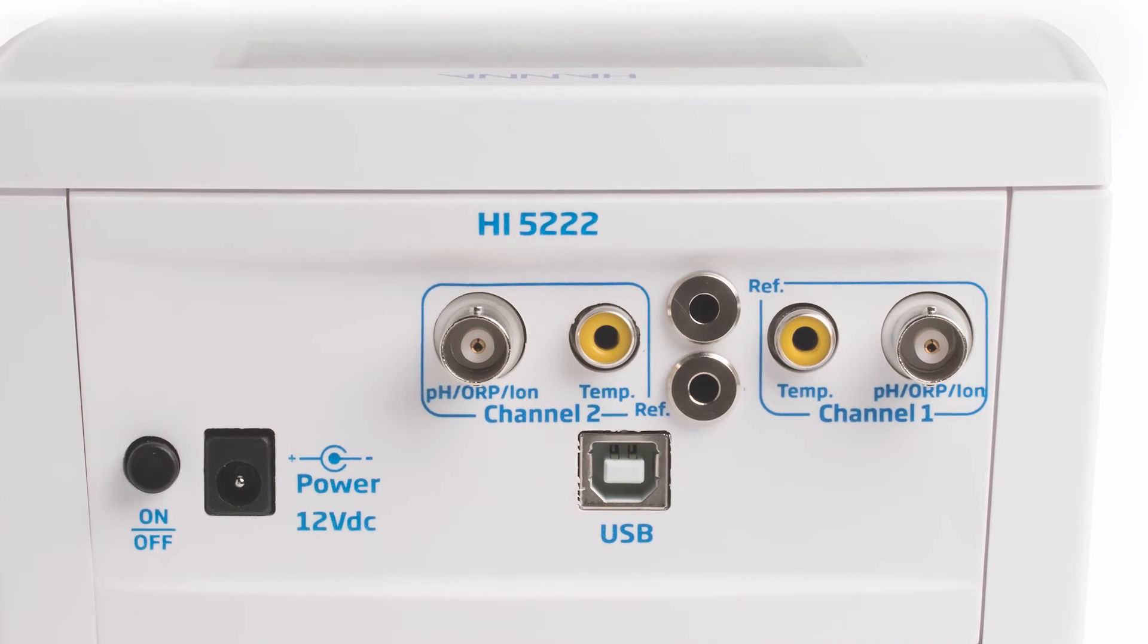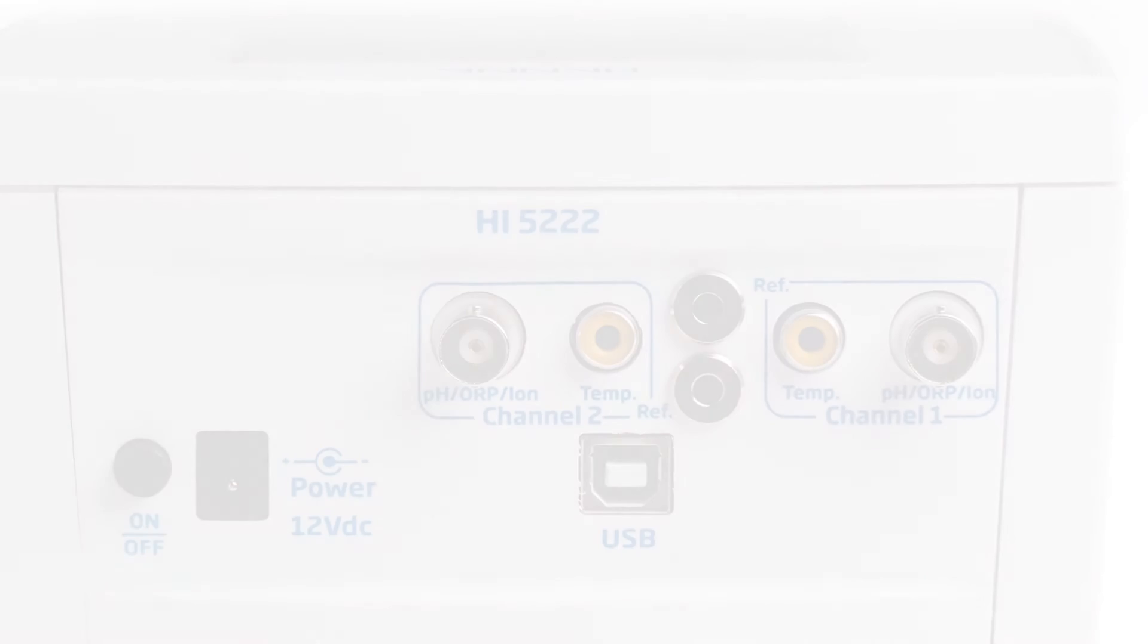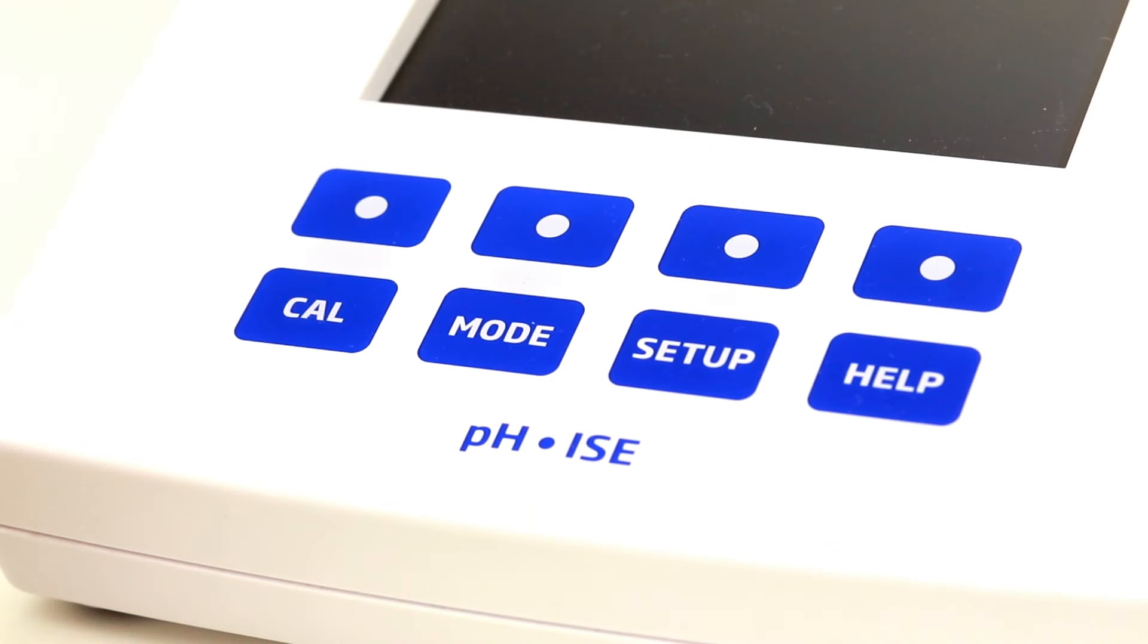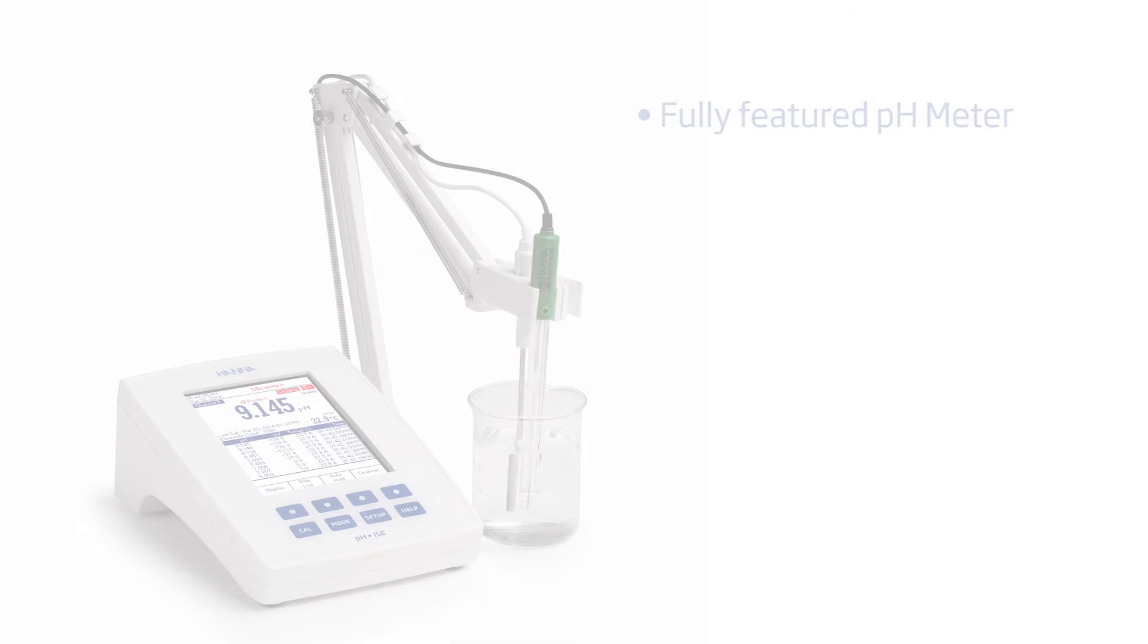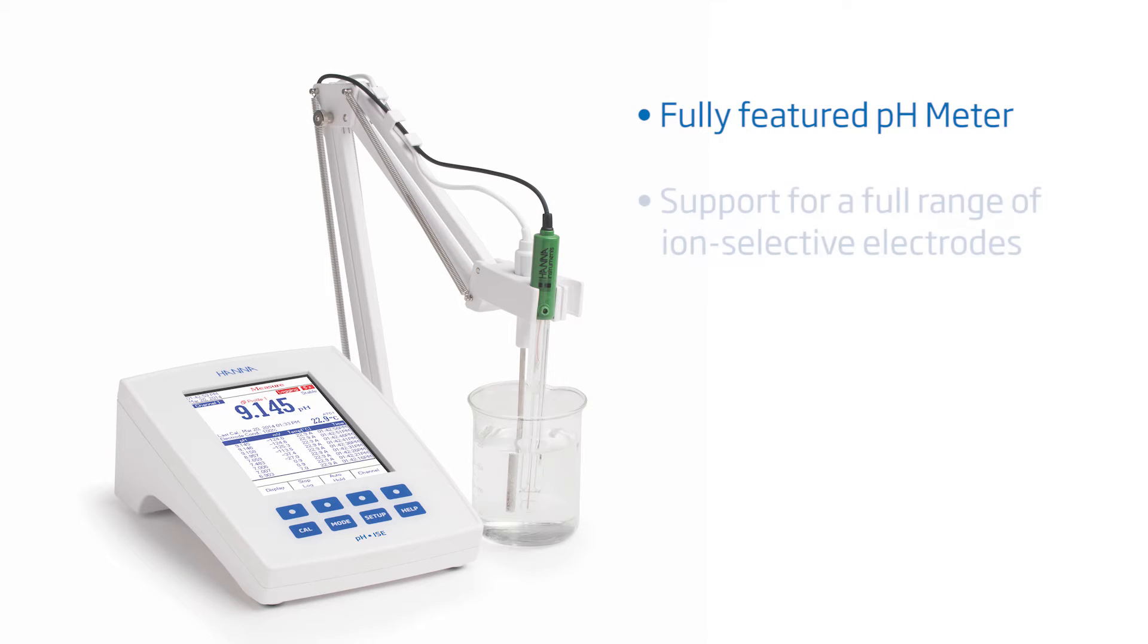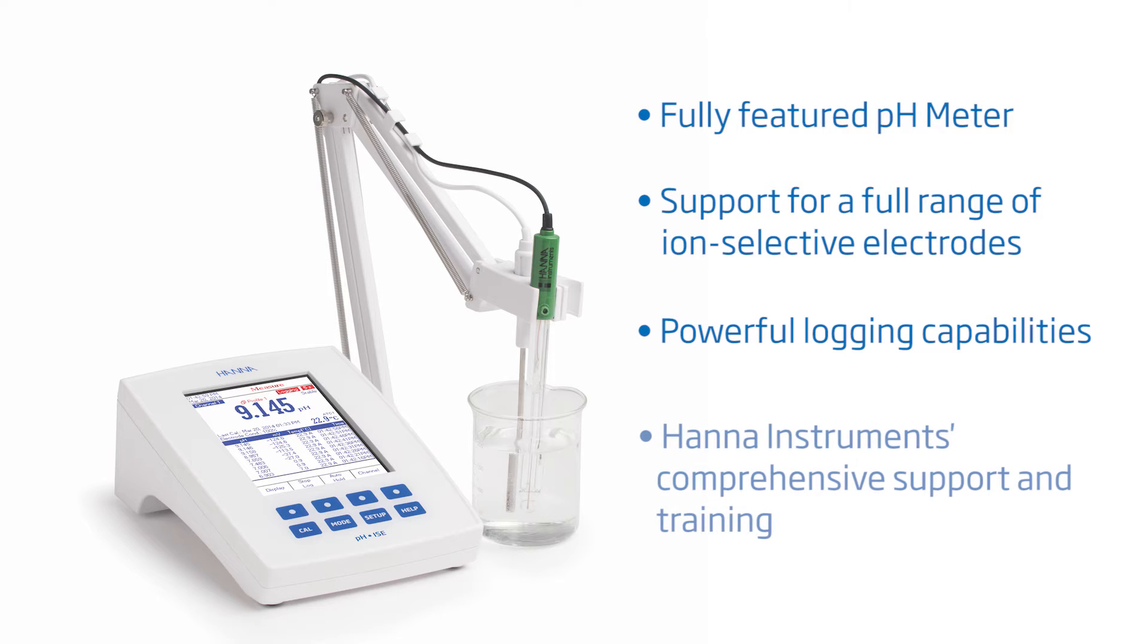The HANA HI5222 two-channel meter does more than just titration. It also has a wide range of features: fully featured pH meter, support for a full range of ion-selective electrodes (ISEs), powerful logging capabilities up to 100,000 data points, and HANA instruments comprehensive support and training.